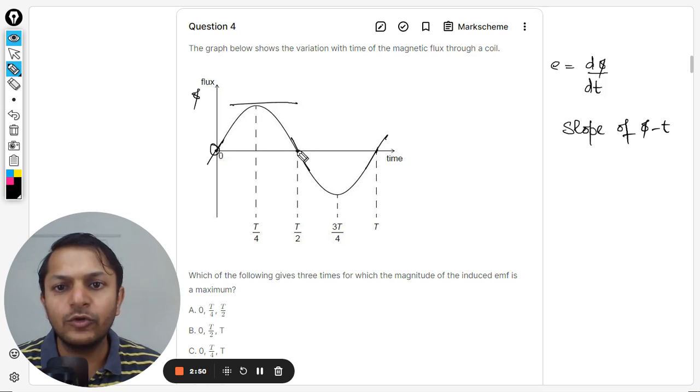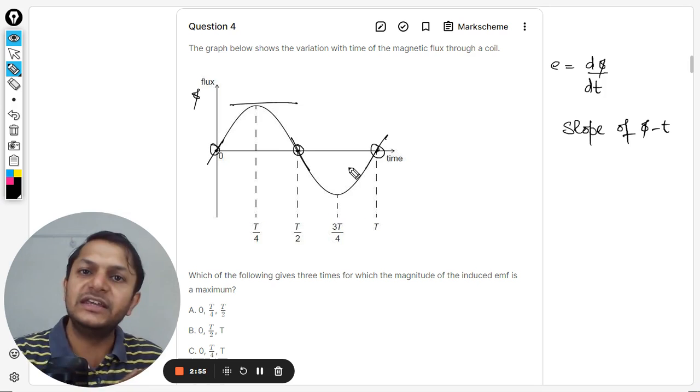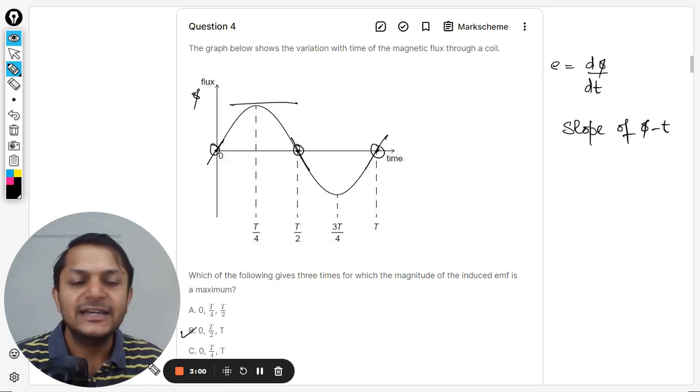And the other thing is this. So we can also see only and only slopes if we do not actually want to go into the calculus part of this question. So even then the answer will be 0, t by 2, and t. So these are the two methods in which we can do this question.